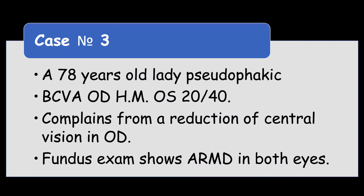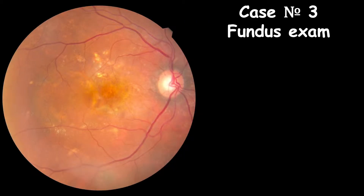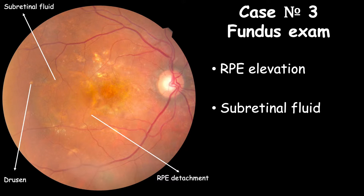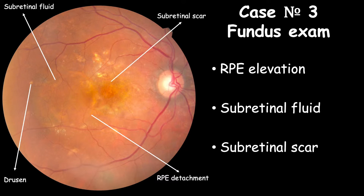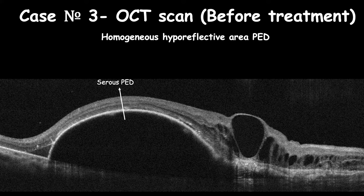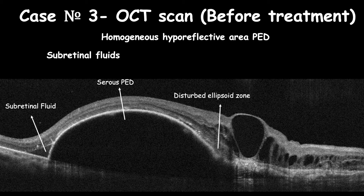A 78-year-old pseudophakic lady presented with reduced vision. Her best corrected visual acuity is hand motion in her right eye and 20/40 in her left eye. Fundus examination shows signs of AMD with smooth, well-defined borders of RPE elevation and slight pale appearance, accompanied by subretinal fluid, exudation, drusen, and subretinal scar. OCT scan shows PED featuring RPE elevation with smooth borders containing clear homogeneous hyporeflective fluid, with subretinal fluids accompanied by ellipsoid zone disruption and intra-retinal cysts.